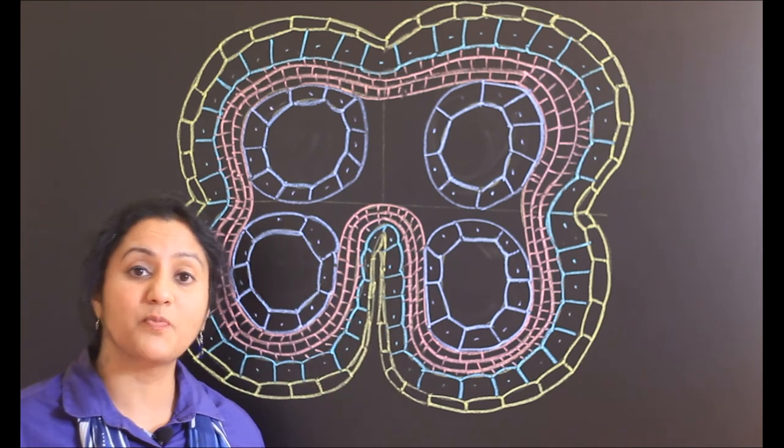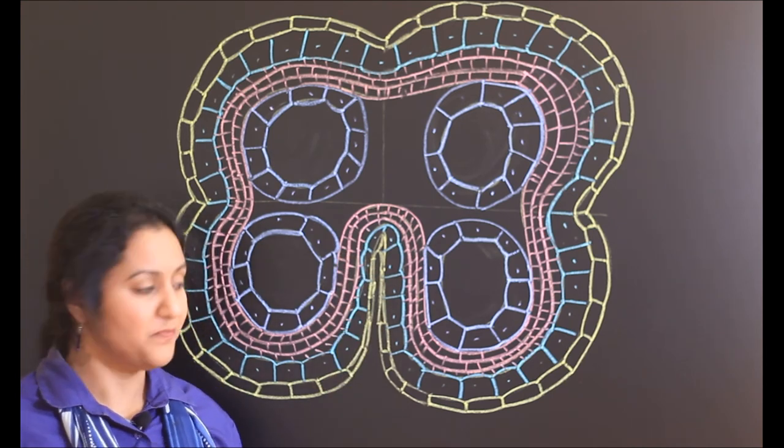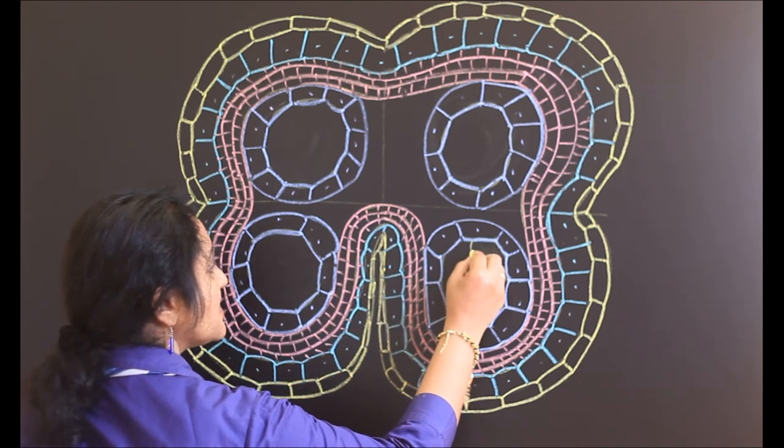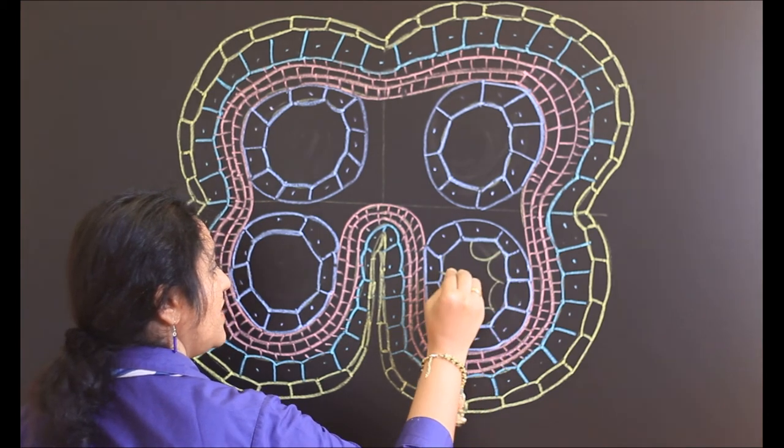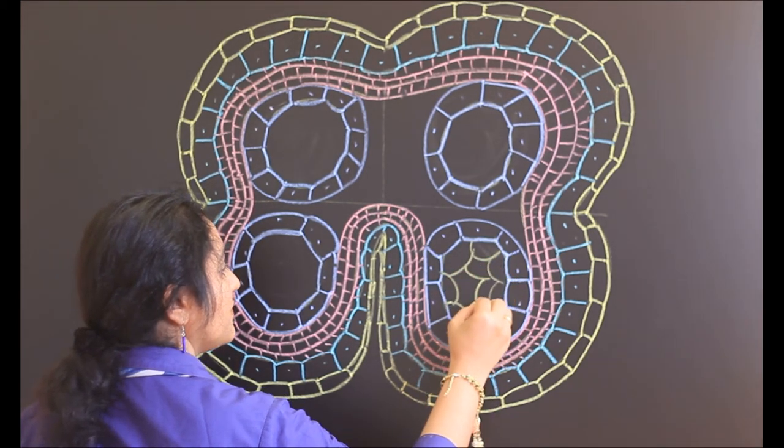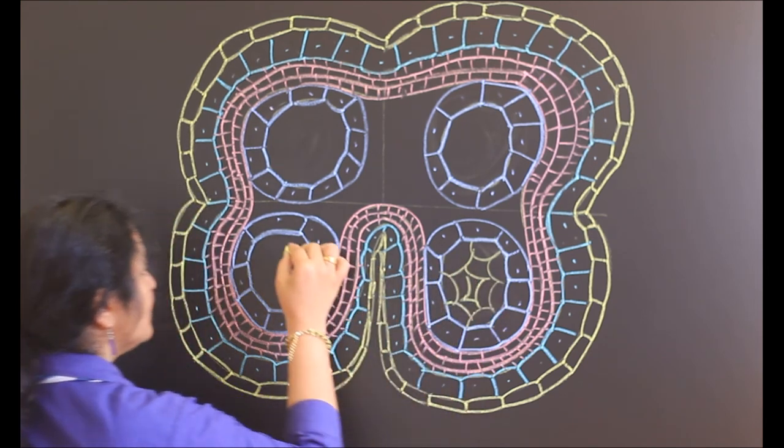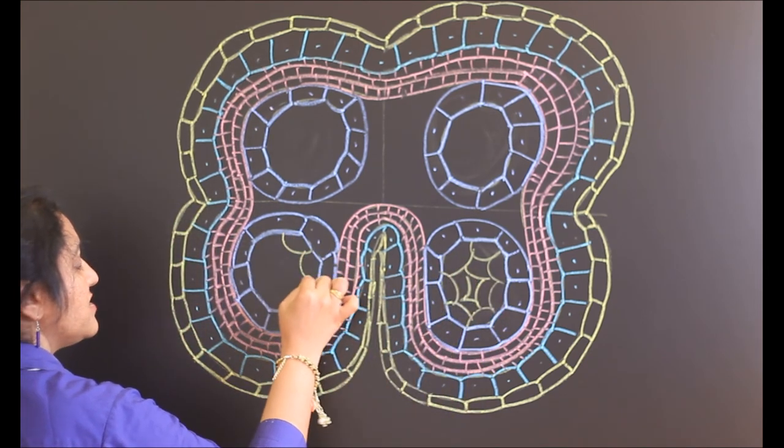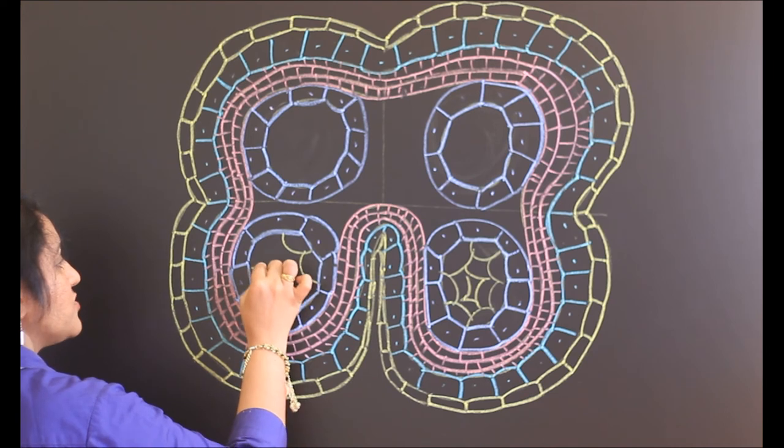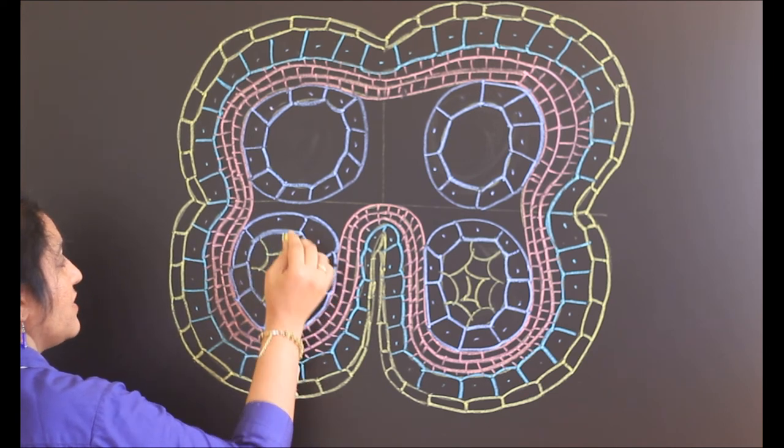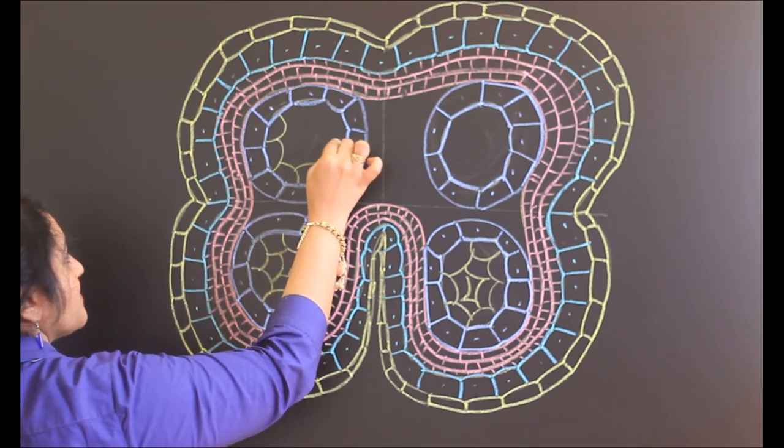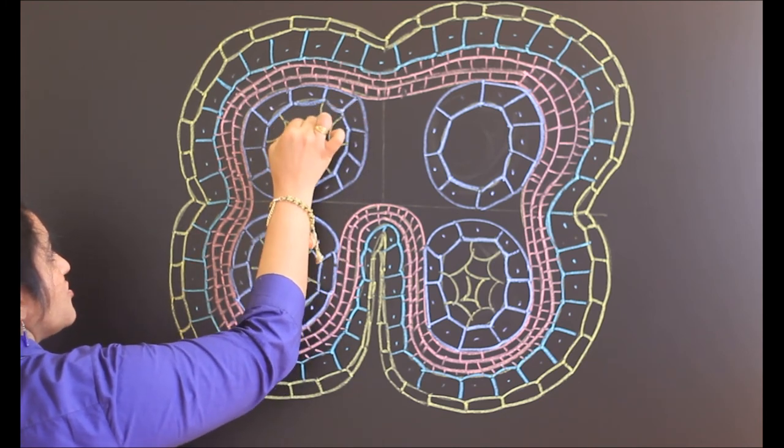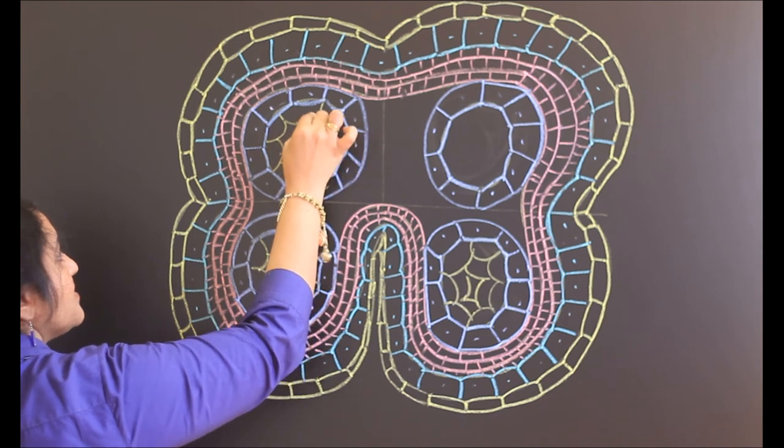Now we have to fill in the sporogenous tissue. That is very simple. Just have to draw some semi-circles inside. This is how we draw sporogenous tissue. So sporogenous tissue later transforms or differentiates and becomes the pollen mother cell and later pollen grains. So this is how you can draw the sporogenous tissue.